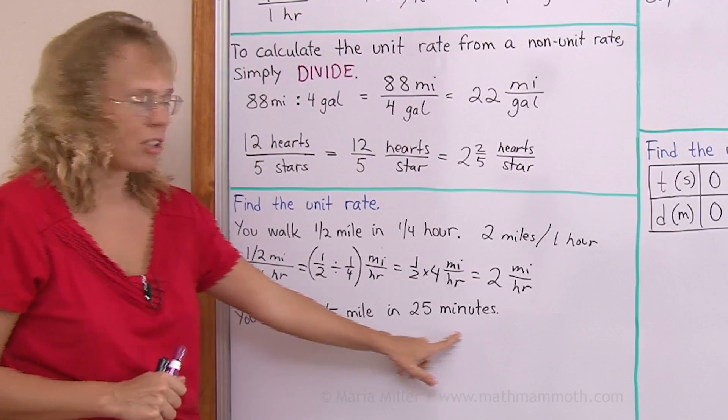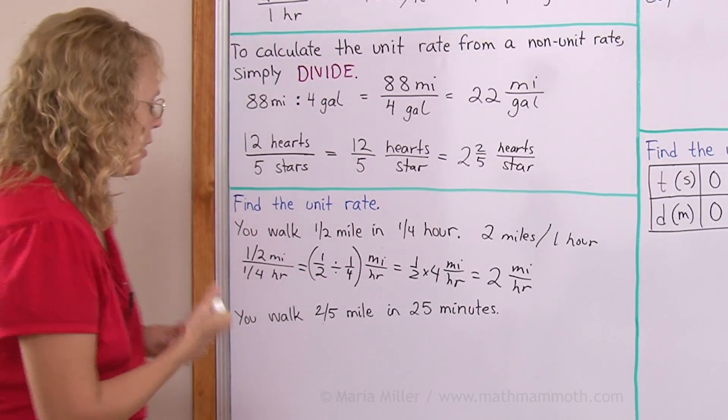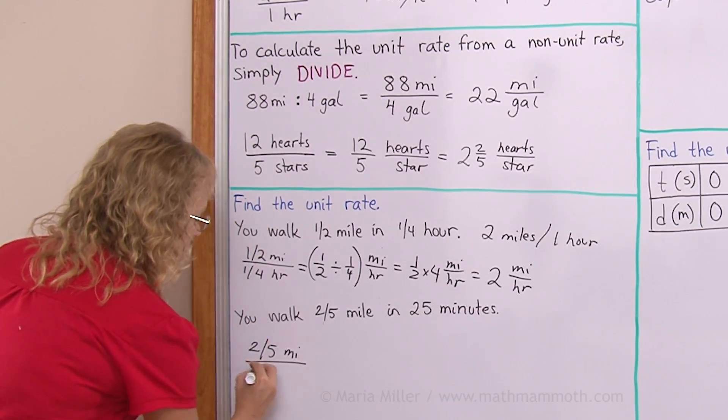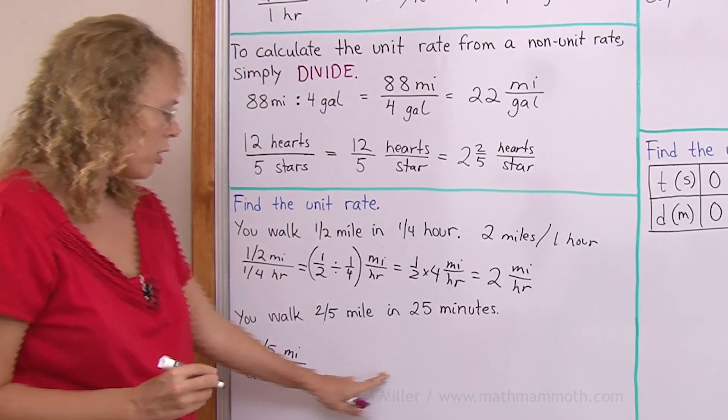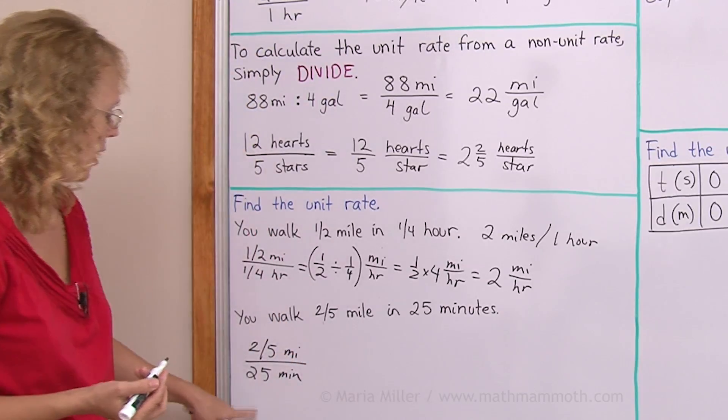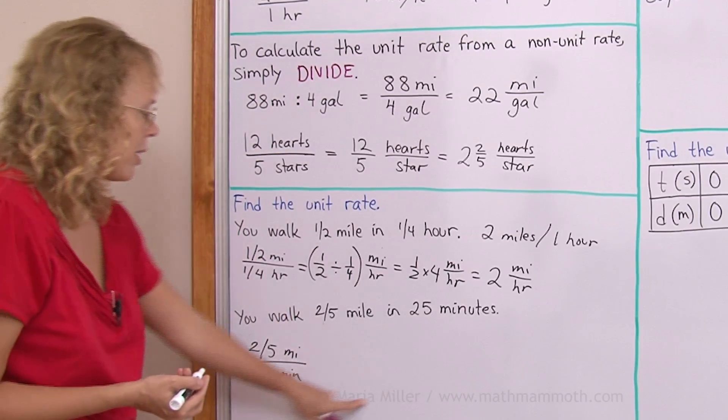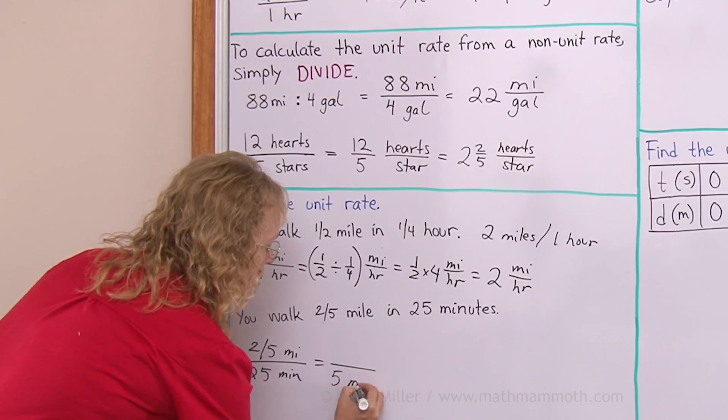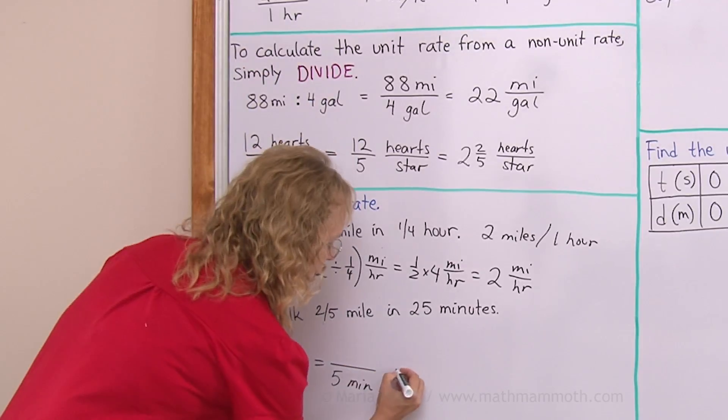Another one, we have a fractional part of an hour. You walk two fifths of a mile in 25 minutes. Let me show you how to solve this one. Let's write the rate here. My goal is to get to so many miles per one hour, or 60 minutes. But 25 minutes doesn't go evenly to 60 minutes. I cannot therefore simply multiply this by two or something easy like that. But what I will do is I will find the rate per five minutes first. And then from there, I go to the 60 minutes.